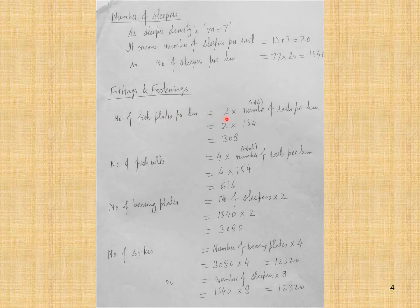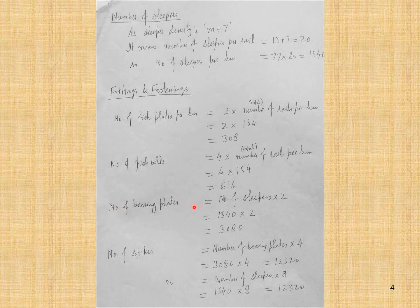The number of fish bolts equals 4 × total number of rails per kilometer = 4 × 154 = 616. The number of bearing plates equals number of sleepers × 2 = 1540 × 2 = 3080.